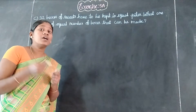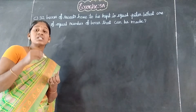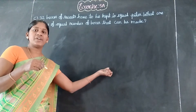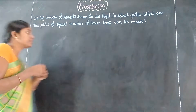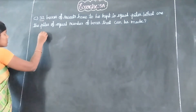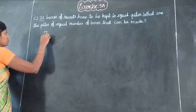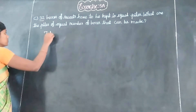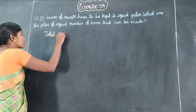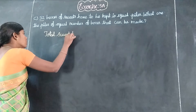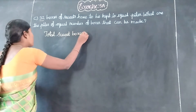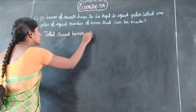First, you can find the factors. Find the pattern — what are the different numbers? Total sweet boxes: 32.